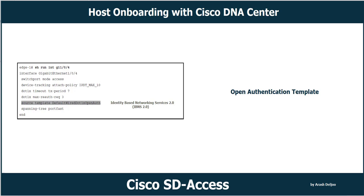A template named 'DefaultWired_dot1x_openAuth' is applied on the host-facing port. As part of the Cisco TrustSec deployment, Cisco moved toward IBNS version 2, or Identity Based Networking Services version 2. Open authentication means monitor mode — all clients that connect to this port can pass their traffic whether they pass or fail authentication. They can still reach the services of the network.